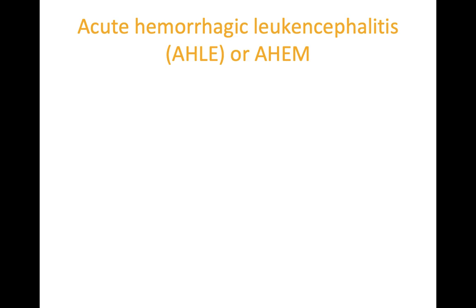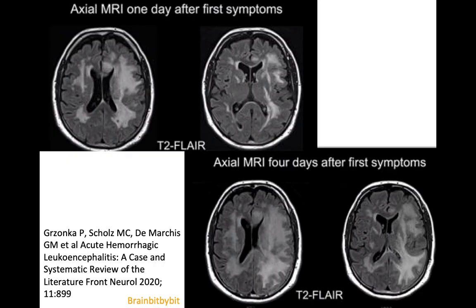Hemorrhagic leukencephalitis is the most severe form or variant of acute disseminated encephalomyelitis (ADEM). If you have a patient after an infection or vaccination that you've initially diagnosed with ADEM and that deteriorates much quicker than you would expect, this hemorrhagic variant is a good option to consider.